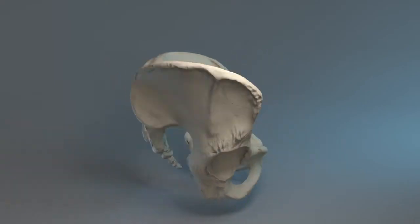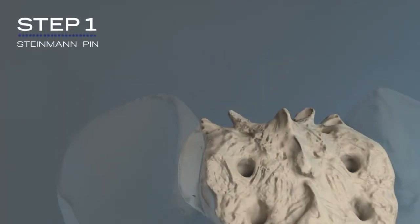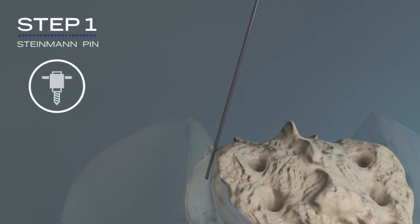First, the Steinman pin is inserted into the SI joint between the sacrum and the ilium. There is no drilling involved.